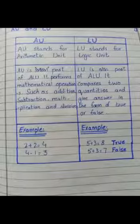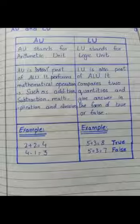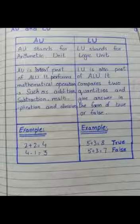5 plus 3 is equal to 8 — اس کا جواب بالکل صحیح ہے، اس کے لیے آگے true لکھا جاتا ہے۔ 5 plus 3 is equal to 7 — یہ جواب غلط ہے، اس کے آگے false لکھا جائے گا۔